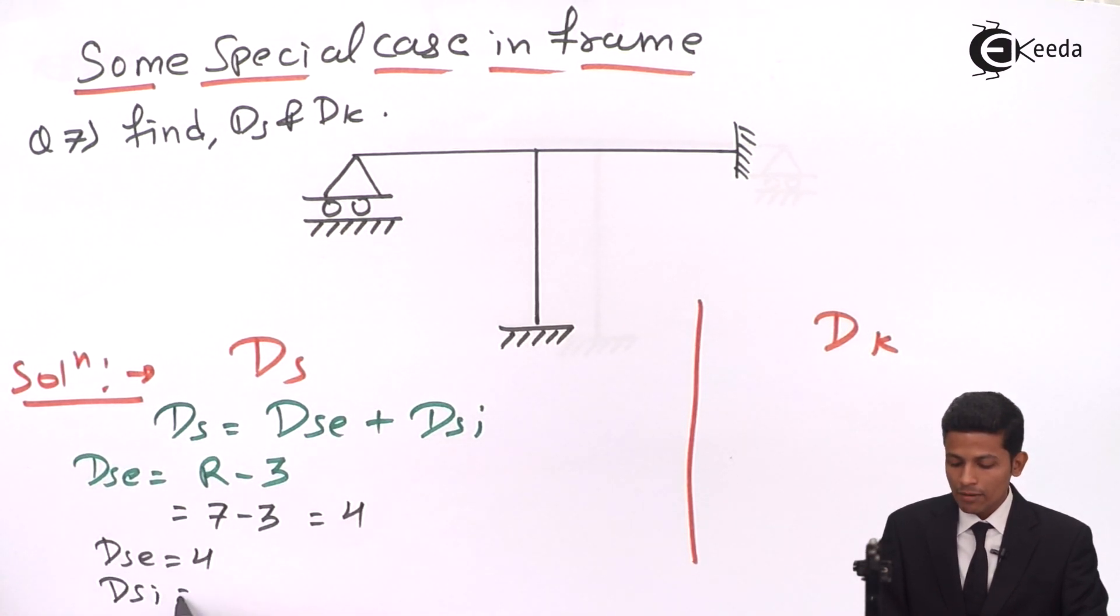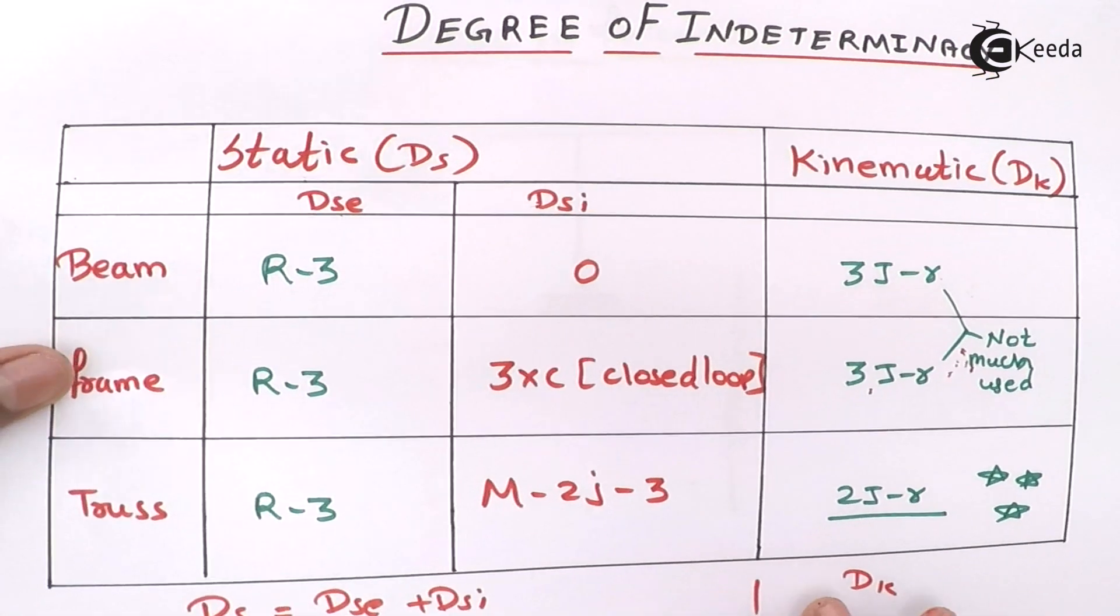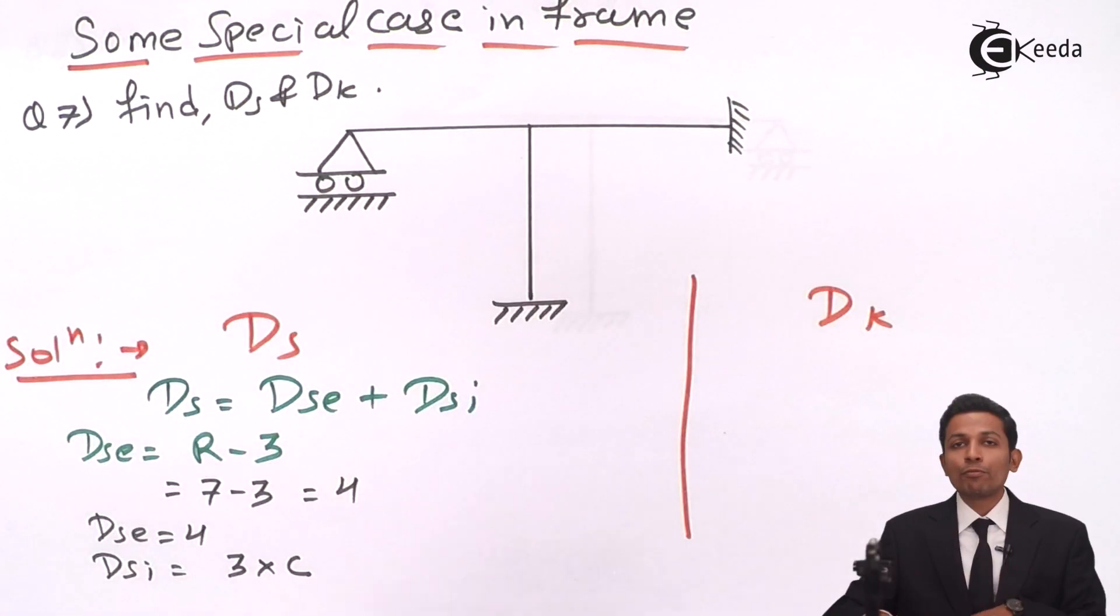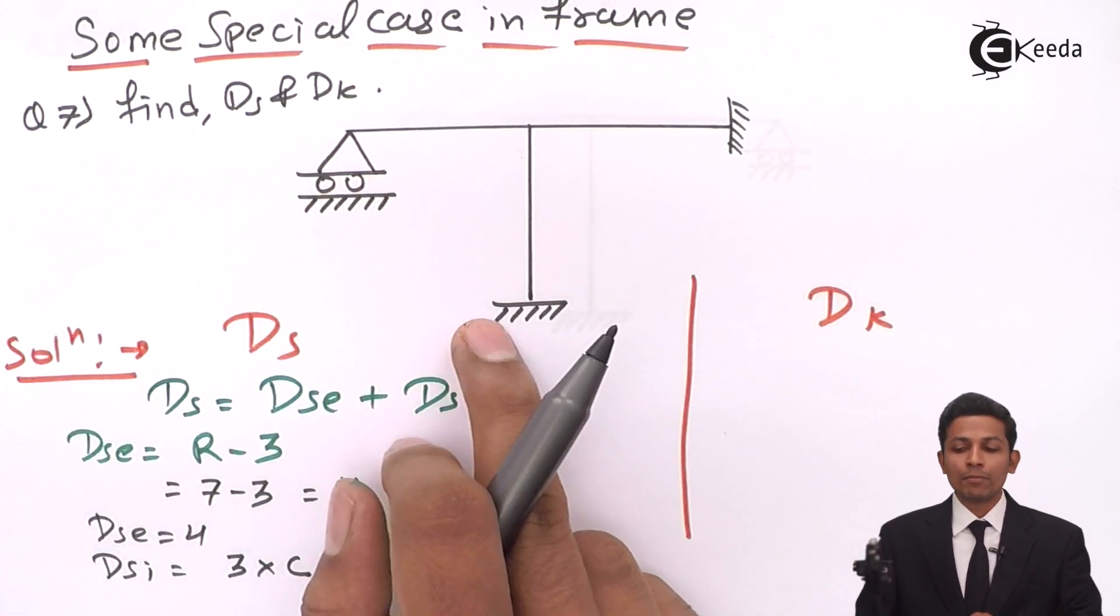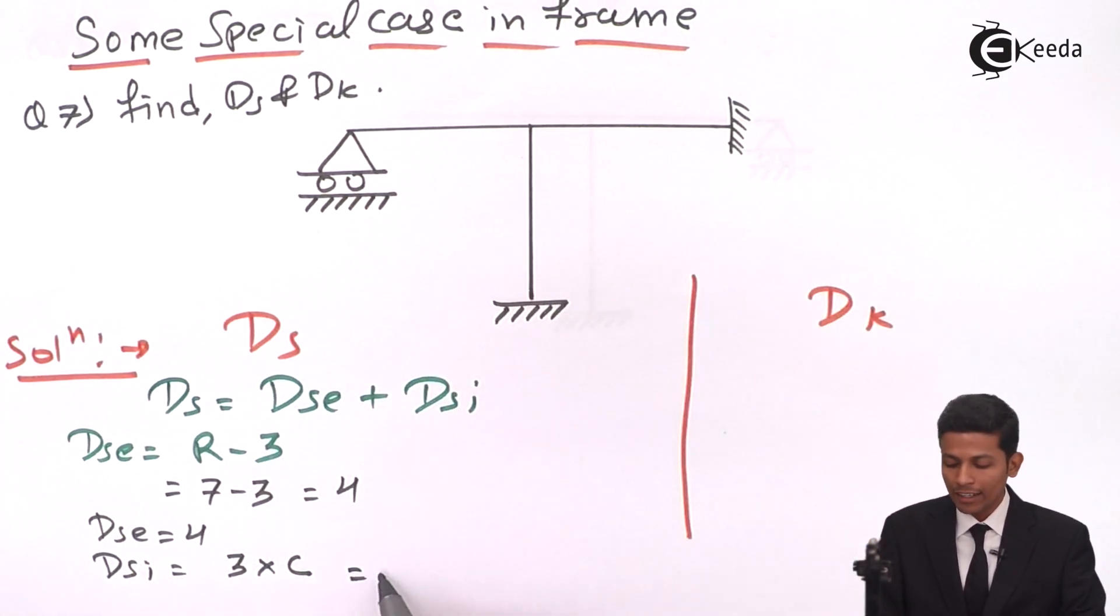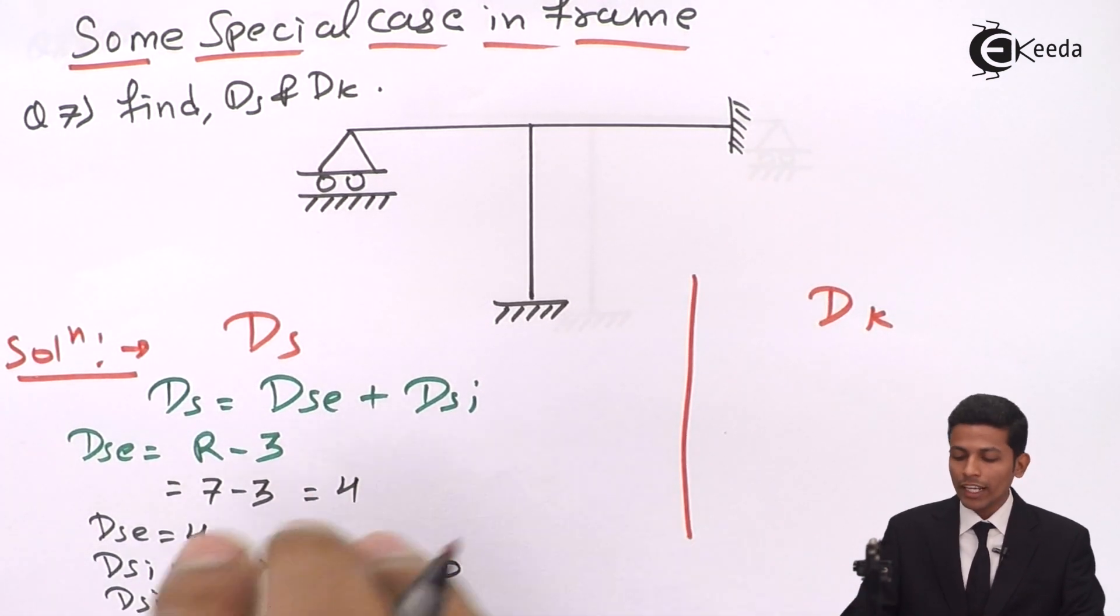Dsi will be 3 into C. Now see, in frames you know this 3 into C is nothing but closed loop. But in these types of problems it is also a frame but there is no closed loop. There is no closed loop over here, so we have to write 3 into 0. This is important in this question. So your Dsi will be 0, means your total Ds will be 4 plus 0 equal to 4.